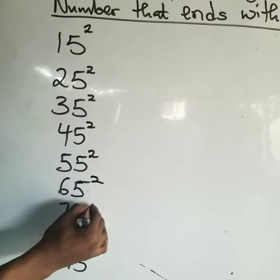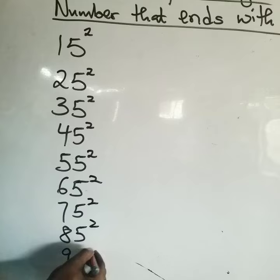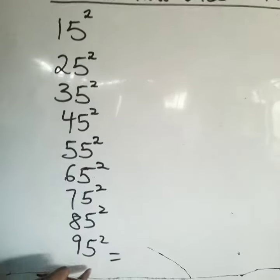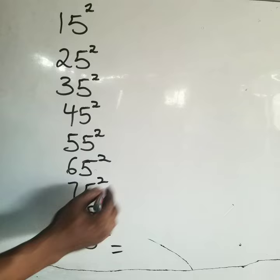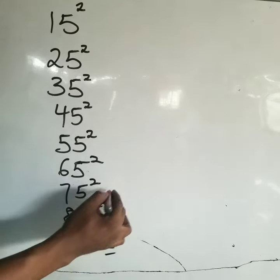For instance, 95 squared means 95 times 95. Okay, 85 squared means 85 times 85.